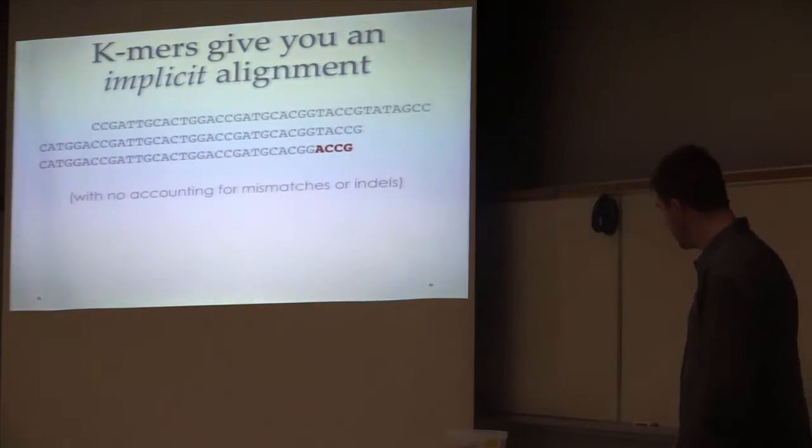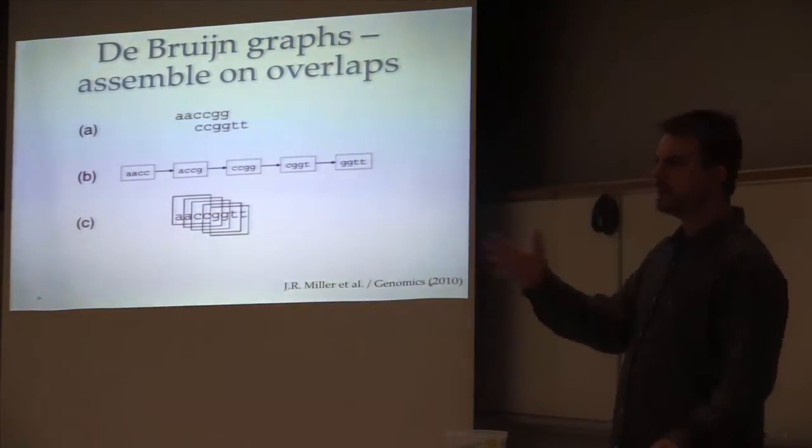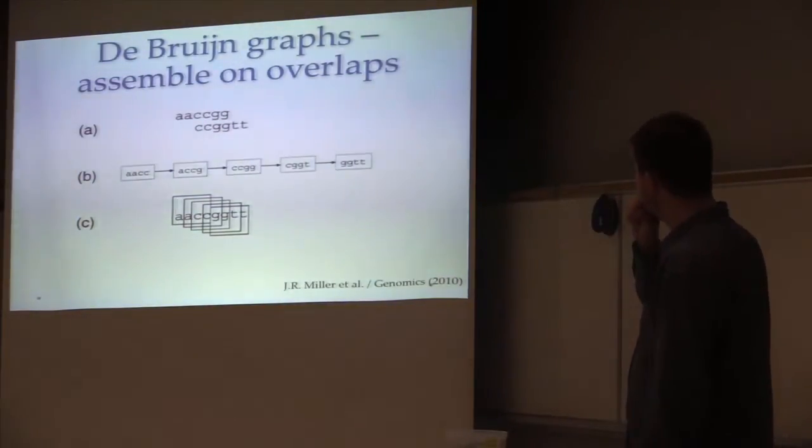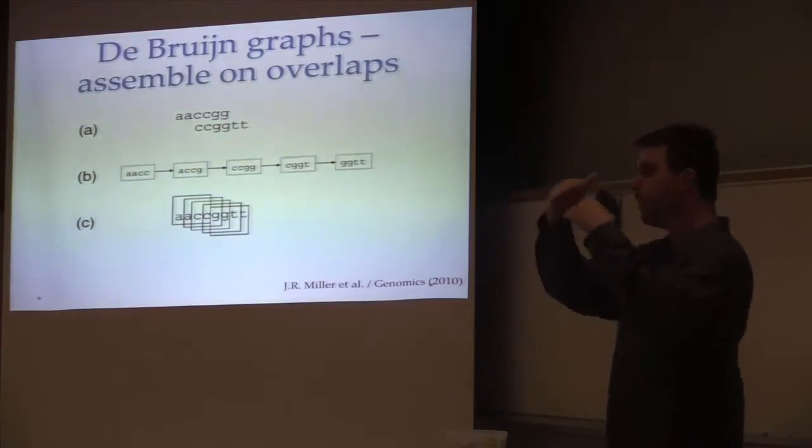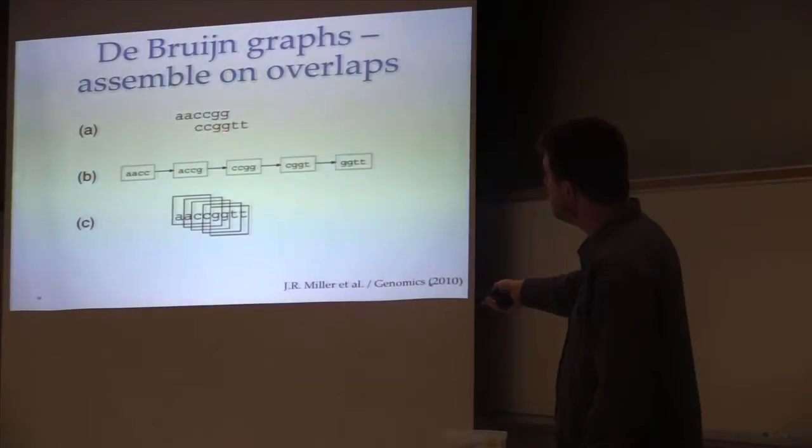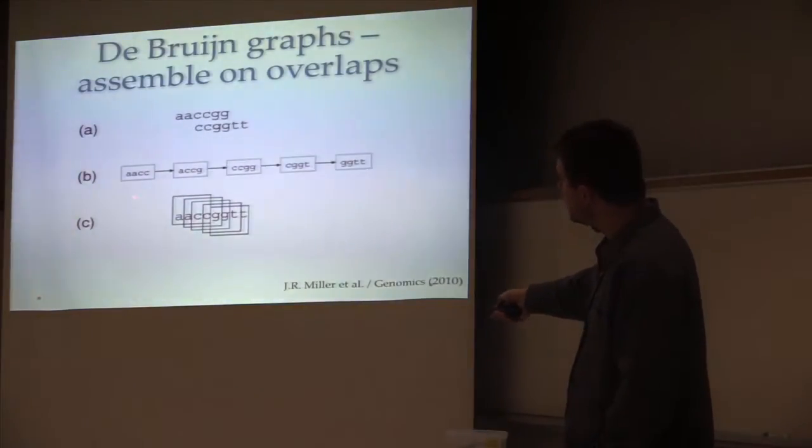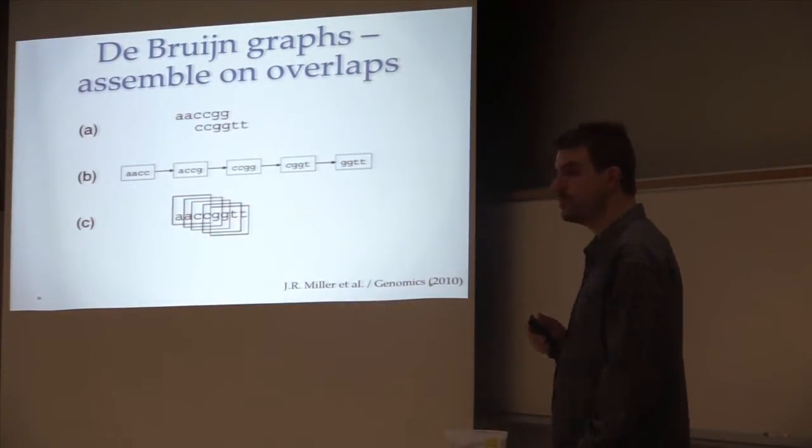A very common approach to assembly these days, or at least it has been for the last 10 years, is de Bruijn graphs, where you take your sequences, you break them down into K-mers, and then you rebuild longer sequences by walking from K-mer to K-mer to K-mer. This is the concept at the heart of de Bruijn graph assemblers like Velvet and Abyss and SOAPdenovo.